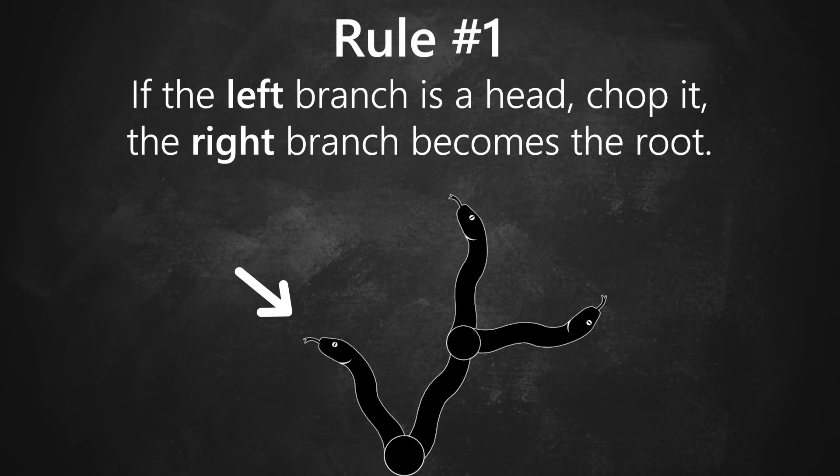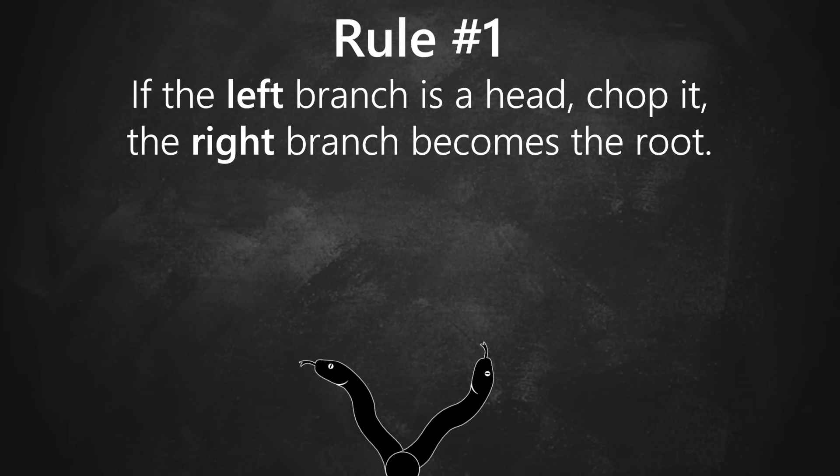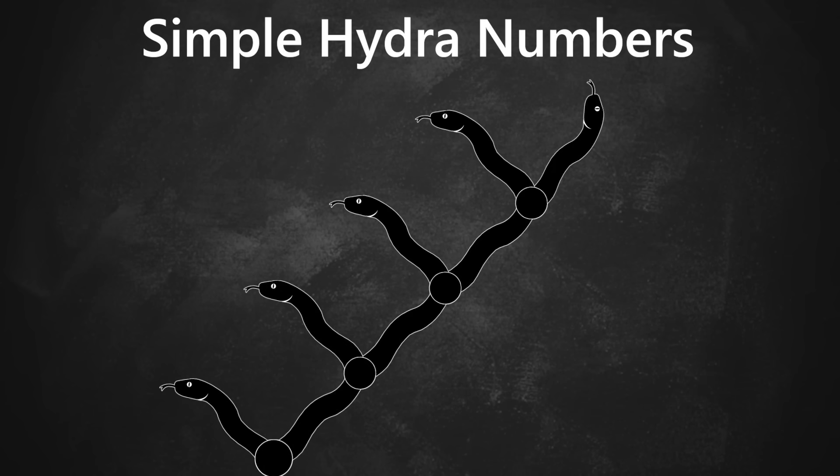First, if the left branch is a single head, you can always chop it, causing the right side to become the new root. So we can define the natural numbers like this, where stacks n heads tall take n cuts.